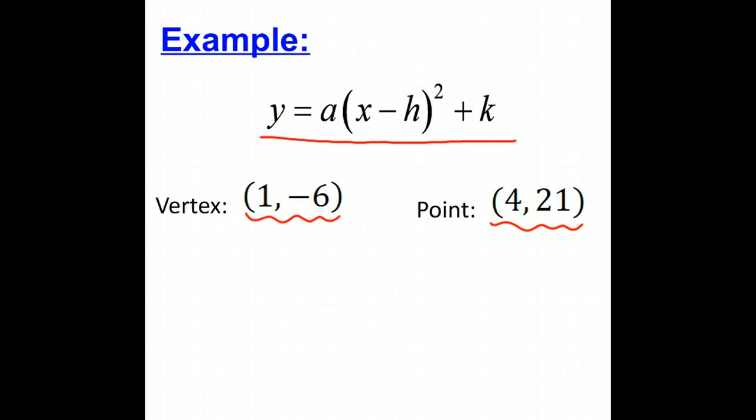So what we need to do is substitute these numbers into the positions in the formula. The 1 is the h coordinate, and the negative 6 is k. 4 will be our x, 21 will be our y. We're going to plug them in and solve for a.